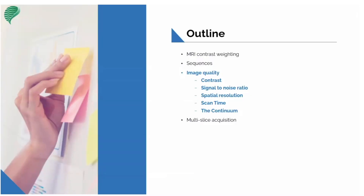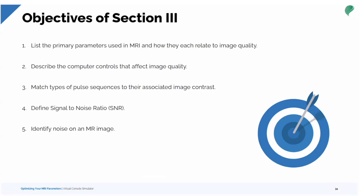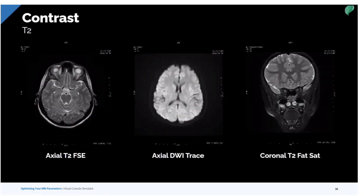Let's get to the image quality part. We'll look at contrast, signal-to-noise, spatial resolution, and scan time, putting those on a continuum to see how they affect each other. We'll look at the parameters used in MR, how they relate to image quality, the computer controls that affect image quality, the pulse sequences and their associated image contrast, and we'll define signal-to-noise ratio and look at noise on the image.